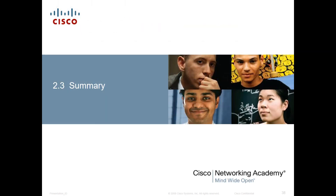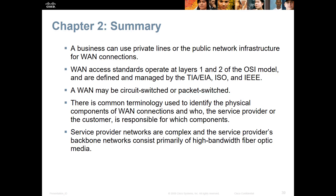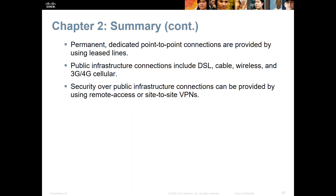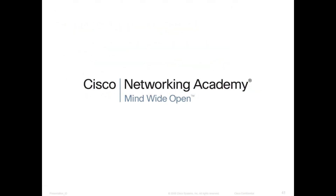And that is this chapter in a nutshell. We talked about different types of WAN technologies, where the WAN technologies are located, the different types of wireless, point-to-point connections, and VPNs. That is the end of this material. If you have any questions, please let me know. Thank you.